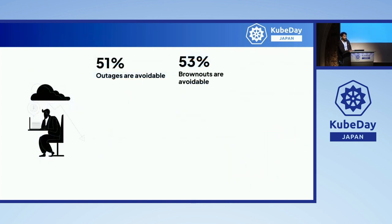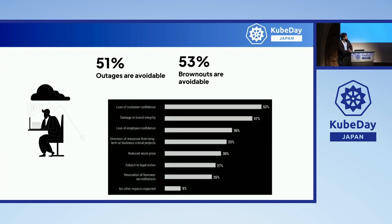These outages are avoidable and these brownouts are avoidable. Netflix started this concept around 2011-12, where they started off with a single production-level failure — more about deleting infrastructure in production or deleting some pods in the Kubernetes aspect. Then it moved on with more production-level failures. This is something that not adopting chaos can cause.